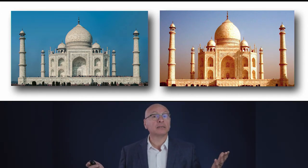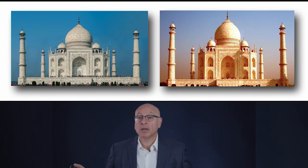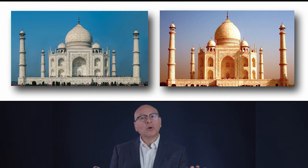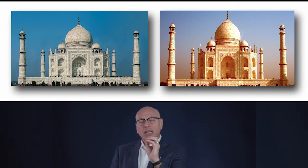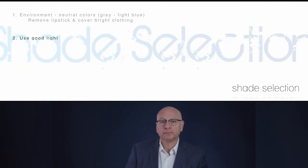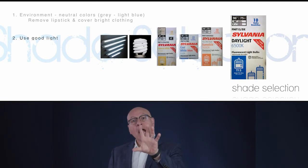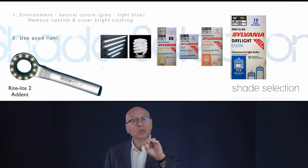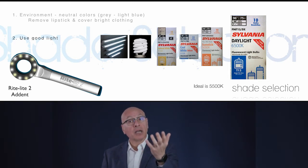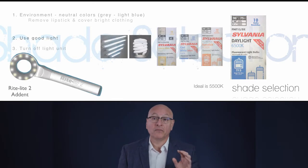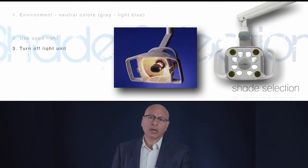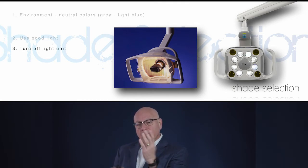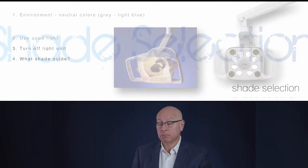Use good light. We have fluorescent lights, so we need to find fluorescent lights that say 'daylight.' If we don't have those, we need special equipment that gives us that type of light — there are very good dedicated light sources available. Turn off your operatory light, because that tends to be incandescent light, which will change the color of your teeth and your shade guide and produce a mismatch between the tooth and the shade guide that isn't actually there. Now, what shade are we going to use?